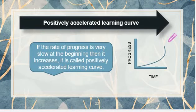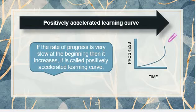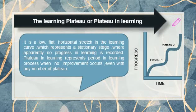The negatively accelerated curve depicts rapid initial improvement when the task is very simple or when the learner has previous practice, and slows down over time if the learner loses interest. The third type is the positively accelerated or concave curve — when the rate of progress is slow at the beginning and increases over time. If the task is new or difficult, the curve starts slow but increases toward mastery. The fourth type is the learning plateau: a low, flat, horizontal stretch in the curve representing a stationary stage where apparently no progress in learning is recorded.